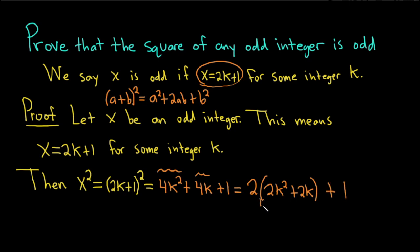And this is an integer, right? Because k is an integer, 2 times an integer is an integer, this is an integer, the sum of integers is integers, so this is an integer, where 2k squared plus 2k is an integer.